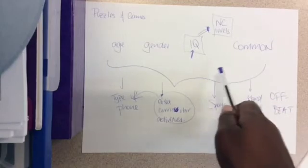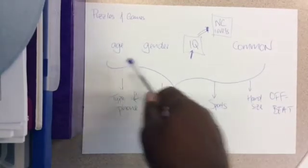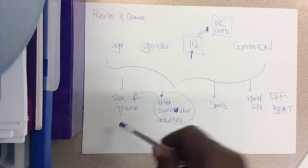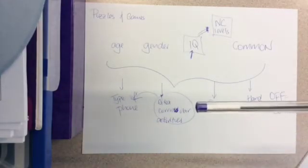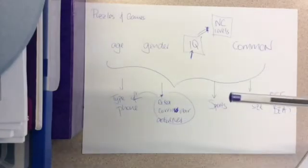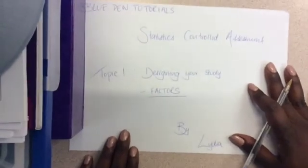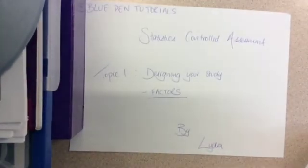Here are some examples of what I call both common factors and more offbeat factors. While it's important for you to note as many common ones as possible, try your best to start thinking of some more offbeat ones. This is where you can really see an improvement in your grades. This is where you can really start accessing the A stars, the A's and the B's. Once again, this is a Blueprint tutorial by Lydia and we just covered factors in the statistics controlled assessment. Thanks for watching and see you next time.